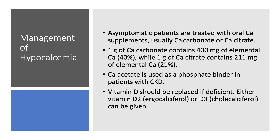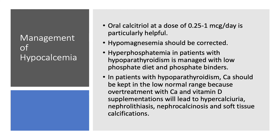Vitamin D should be replaced if deficient — we can use ergocalciferol (vitamin D2) or cholecalciferol (D3). You can use weekly doses of ergocalciferol or daily doses of cholecalciferol. In some patients, especially with hypoparathyroidism, you need oral calcitriol at a dose of 0.25 to 1 microgram per day. Hypomagnesemia should be treated. For hyperphosphatemia with hyperparathyroidism, treat with phosphate binders — preferably calcium acetate, so you are giving calcium and binding phosphorus — along with a low phosphate diet.